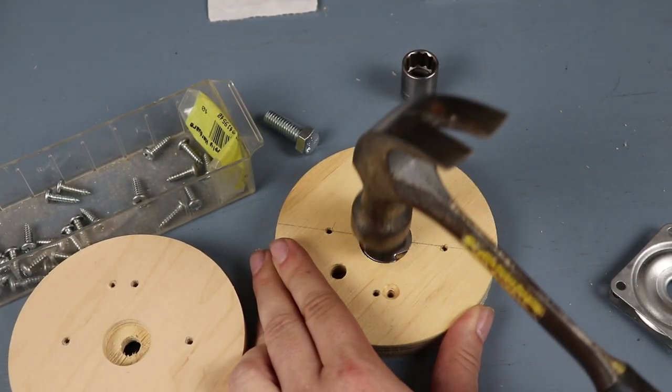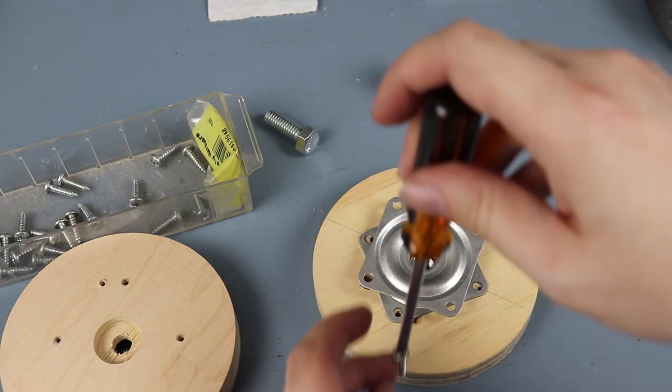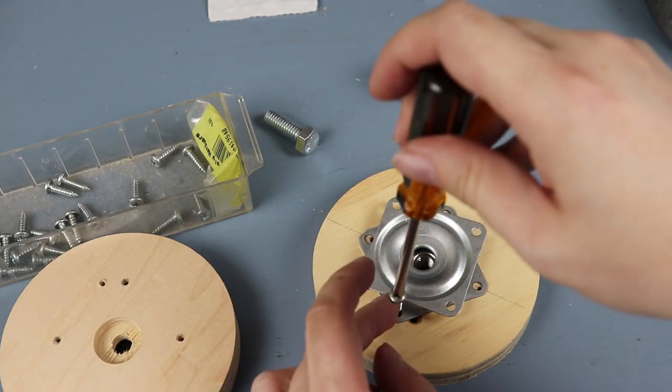The T-nut is simply installed with a hammer and the lazy Susan is installed with screws in the corners.